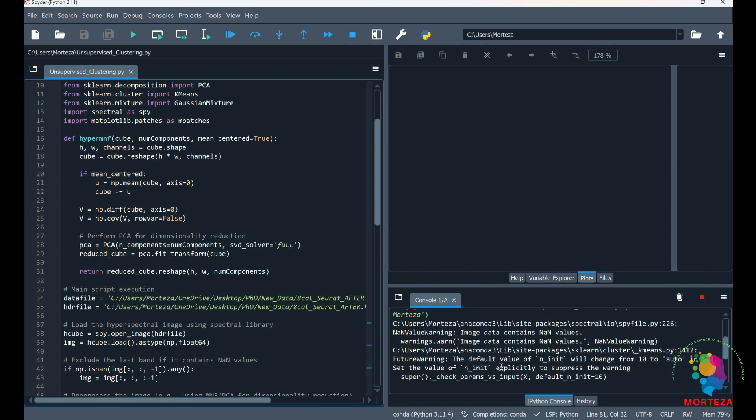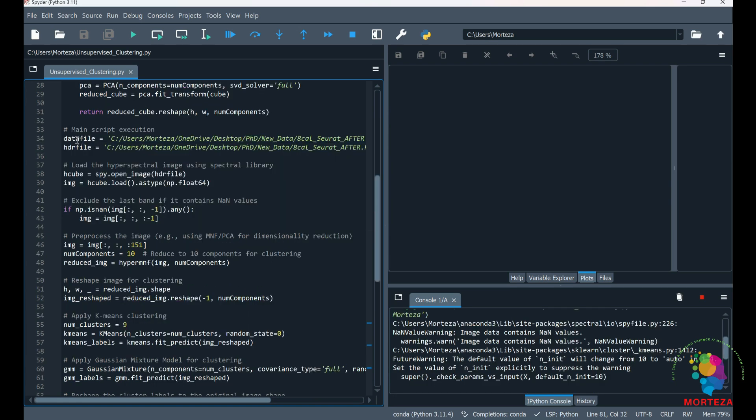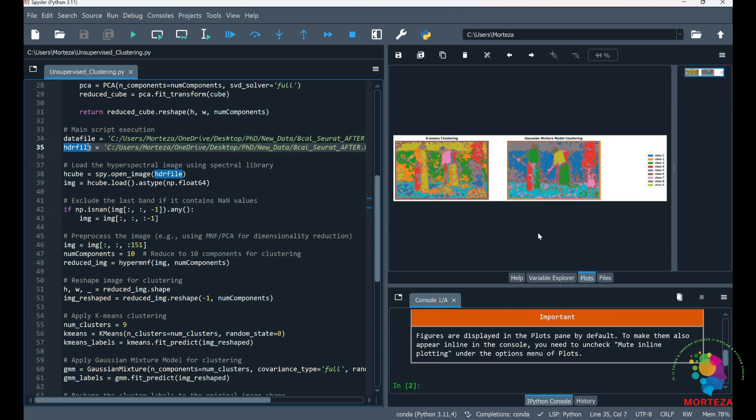As you can see, the last band in my data set contains NAN values, and I have already excluded that. You should also pay attention that the format of my hyperspectral data is ENVI, as you could tell here. Okay, the run is complete. As you can see, this is k-means clustering, and this is Gaussian mixture model clustering.